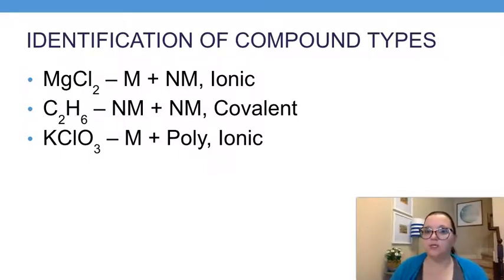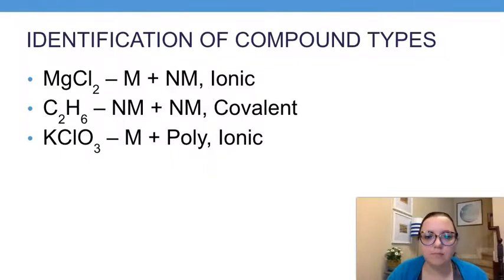The next one's kind of interesting because we see three elements present there. My advice to you is if you ever see three elements present, always watch out to see if maybe there's a polyatomic ion present. If you notice here, we see ClO3, which if you think back to your polyatomic ion list, ClO3 with a negative one charge would be chlorate. So here I have potassium, a metal, with the polyatomic ion of chlorate. It's not shown with its charge because the charges are balancing out, so this would have been a metal plus a polyatomic ion, so it would have been ionic.